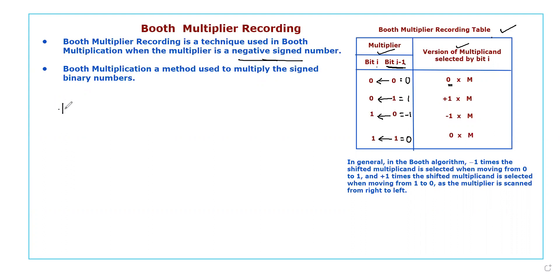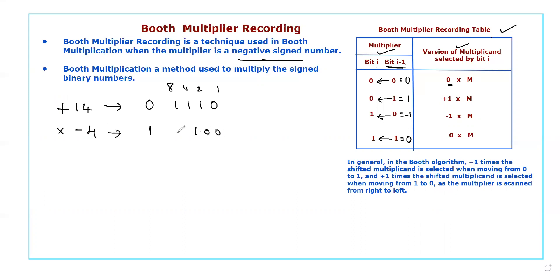Let us take another example. Suppose we multiply +14 by -4. Plus 14 means sign bit is 0, and 14 in binary (8, 4, 2, 1) is 1110, so +14 is 0 1110. Minus 4 means the sign bit is 1, and 4 in four bits is 0100. Since it is a negative signed number, we write the magnitude in two's complement form: keeping up to the first 1 unchanged and flipping the remaining bits, giving us the two's complement for -4.